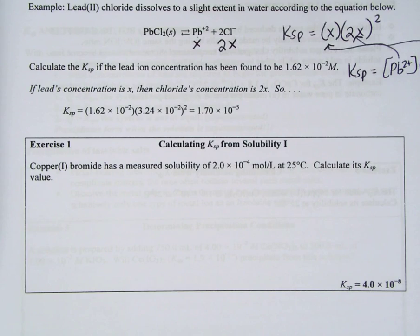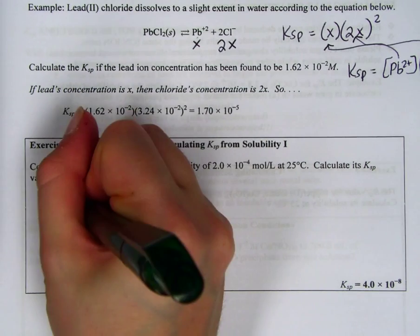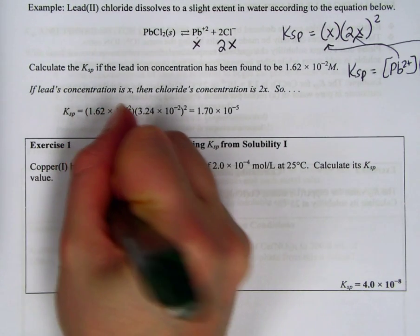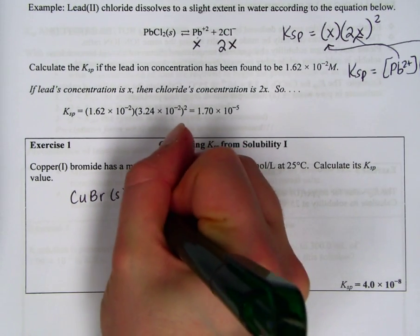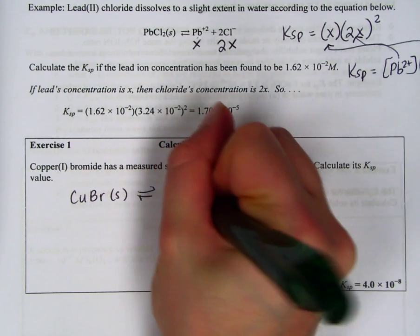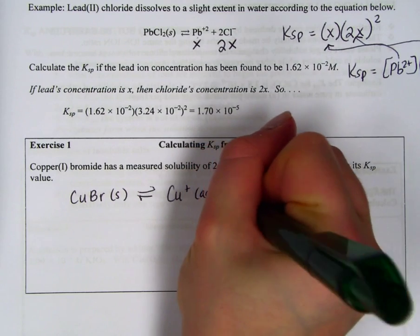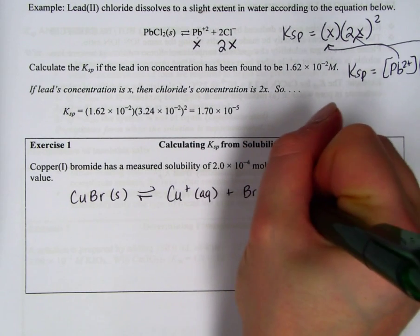Here's another example. Copper 1 bromide, CuBr, has a measured solubility of 2.0 times 10 to the negative 4th molar at 25 degrees Celsius. It wants me to calculate Ksp.